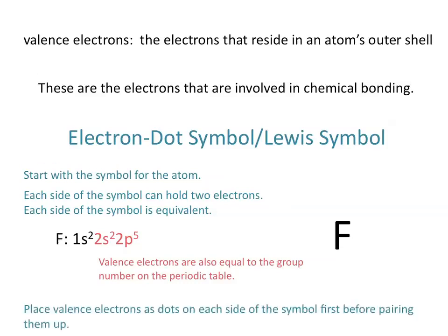We then place the valence electrons as dots on each side of the symbol, first individually before pairing them up. So we need to place 7 valence electrons around fluorine. We start placing them as dots — remember you can start on any side because they're all equivalent — and we place them individually on each side before pairing them up: 1, 2, 3, 4, 5, 6, 7. And this is the electron dot symbol, or Lewis symbol, for fluorine.